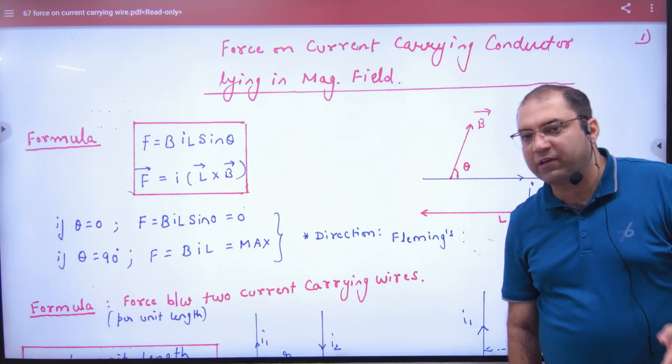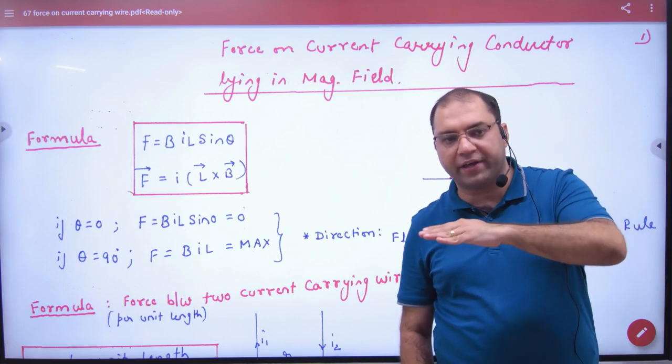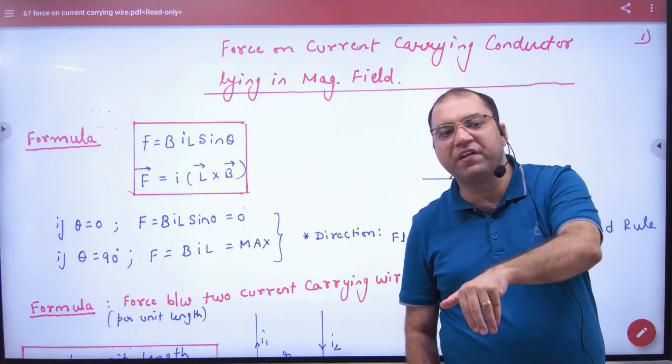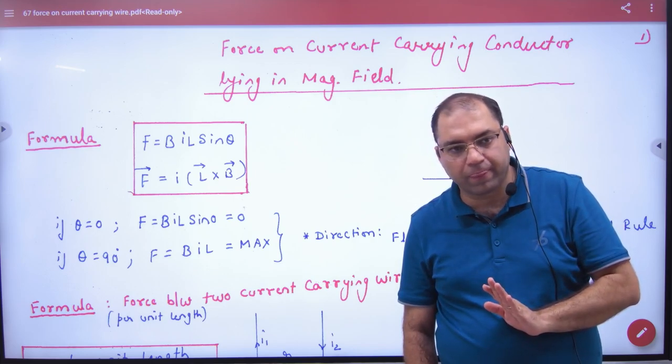Force on current carrying conductor lying in magnetic field means that if you have a current carrying conductor or a wire, and it is in magnetic field, what does it look like on the wire? It looks like a force on the wire.